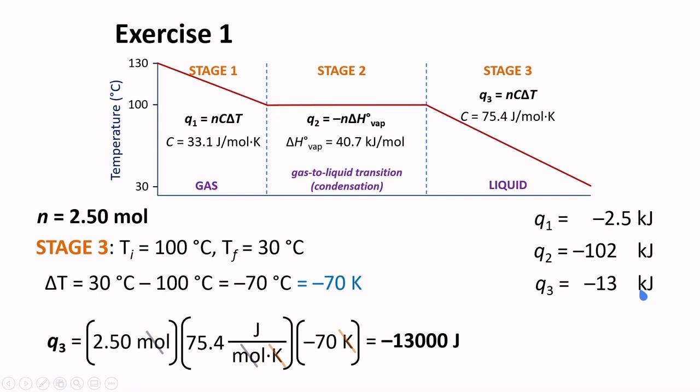Taking the total of all the heat values for stage 1, 2, and 3, we will get negative 118 kJ. It means that 118 kJ is lost by the system during the whole process. Thank you.